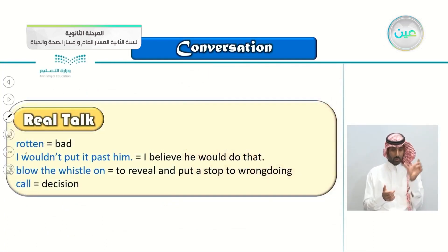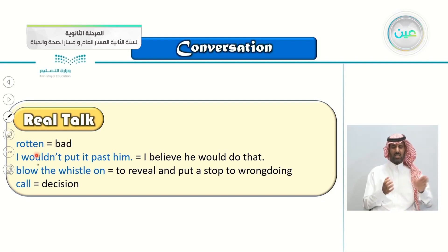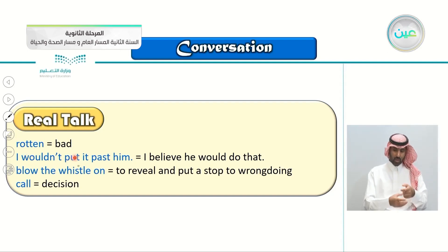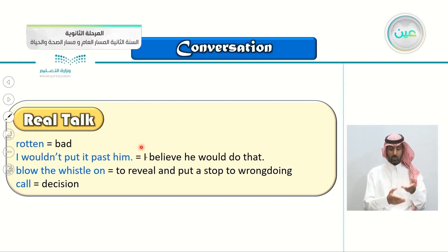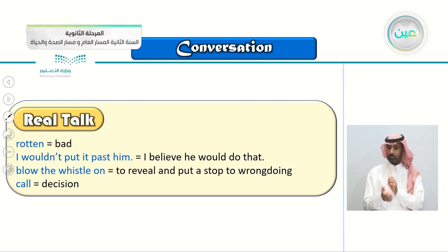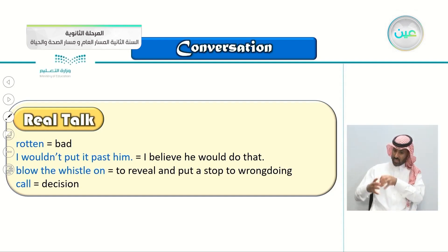Rotten means bad. When Majid said 'He's put you in a rotten position,' he means a bad position. 'I wouldn't put it past him' — when asked if the co-worker might steal from the cash register, Khalid said this, meaning he believes the person would do that. When you say 'I wouldn't put it past him,' it means you believe he would do that. 'Blow the whistle' means to reveal and put a stop to wrongdoing — to tell the manager and put a stop to the wrongdoing.